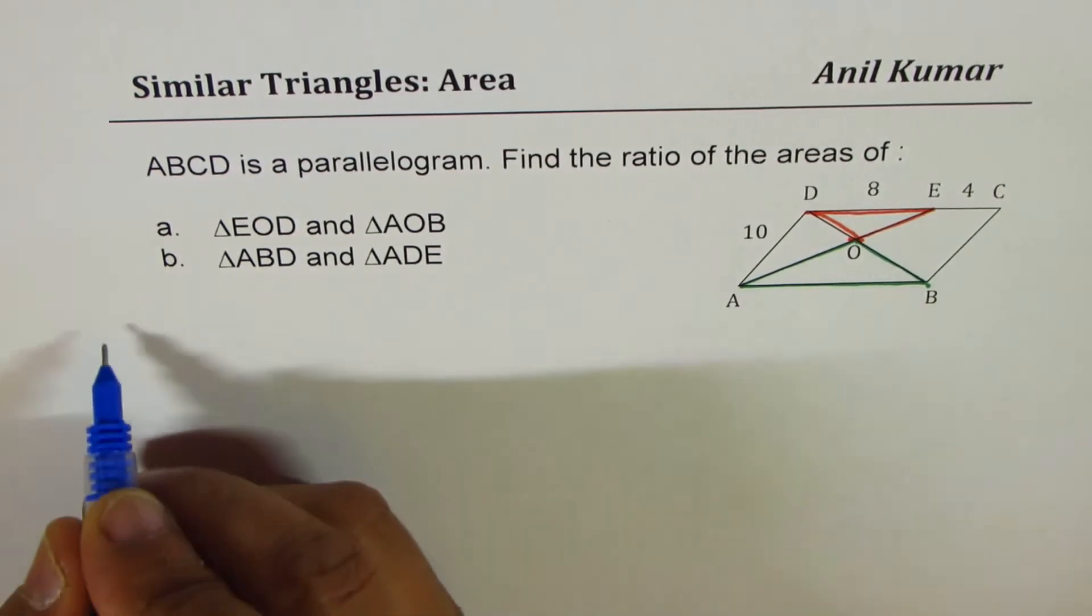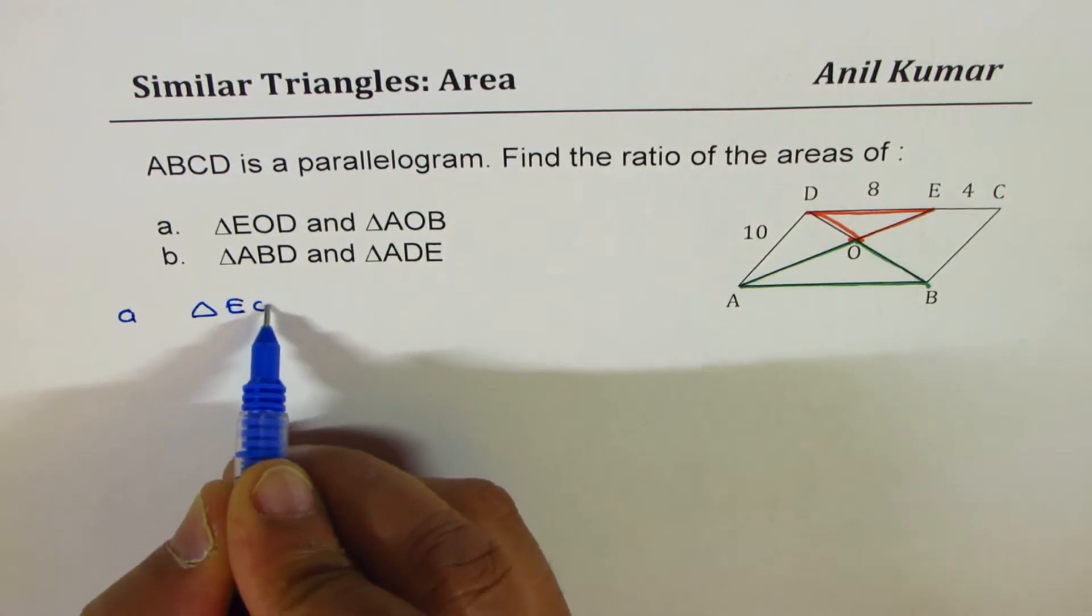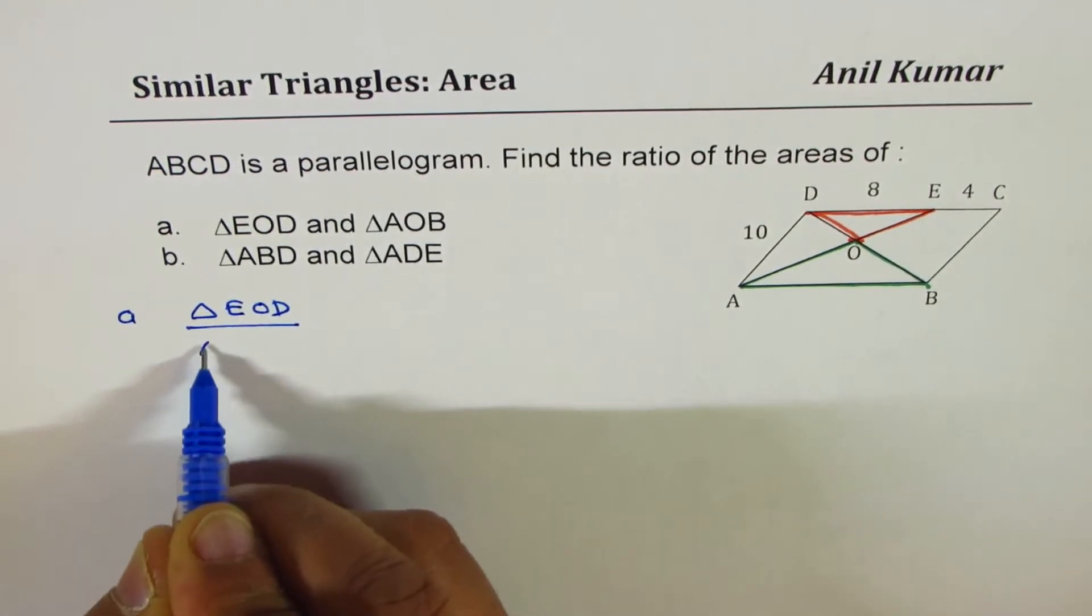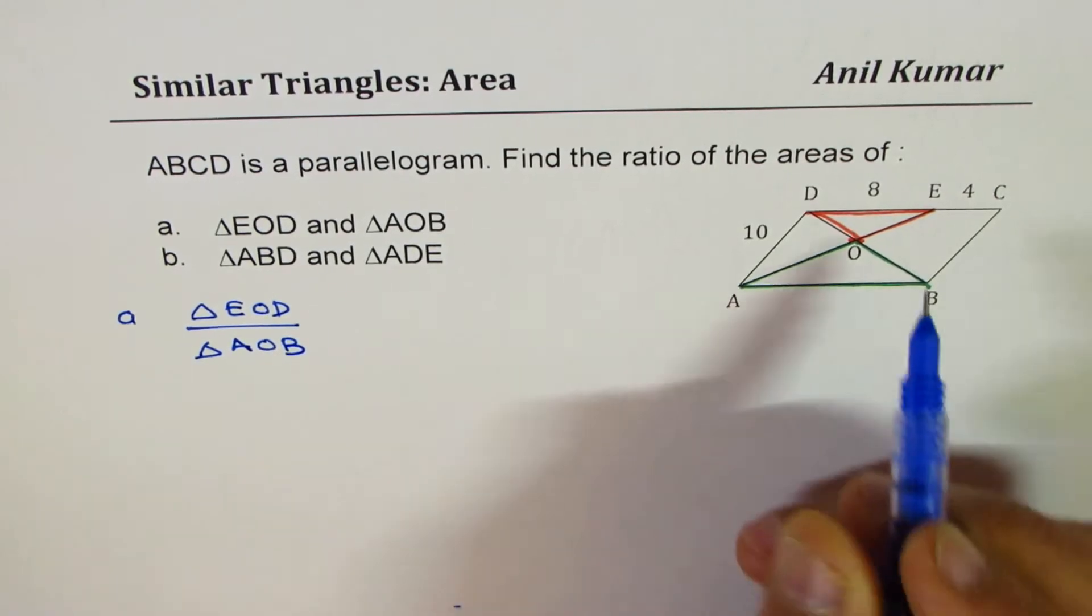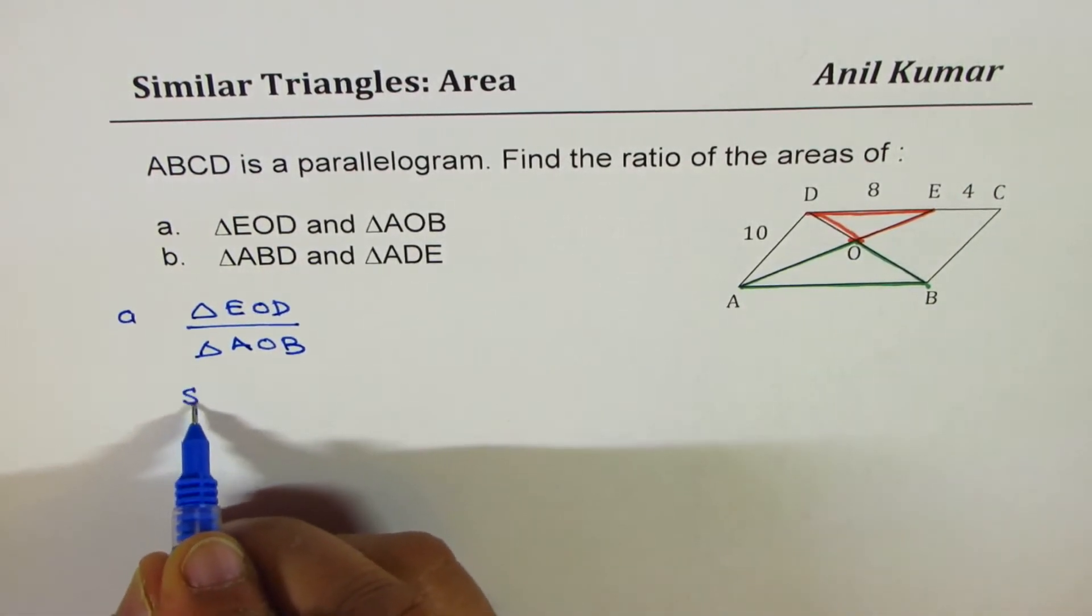Let's do the first part, which is we need to find ratio of triangle EOD to triangle AOB. So as you can see these two triangles are actually similar triangles.